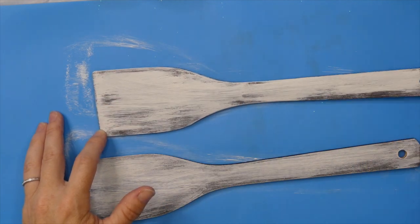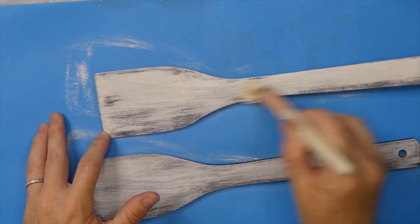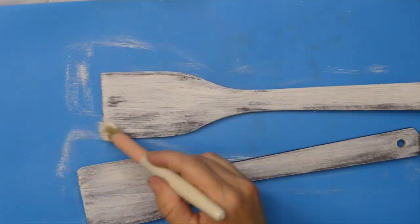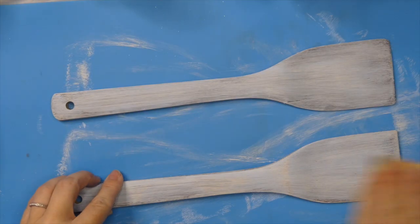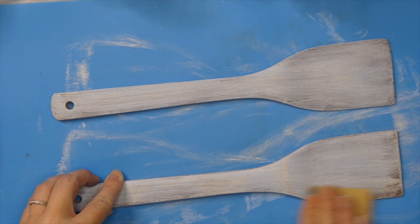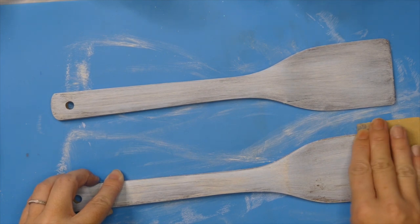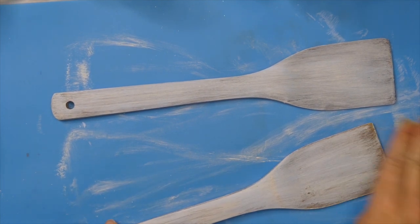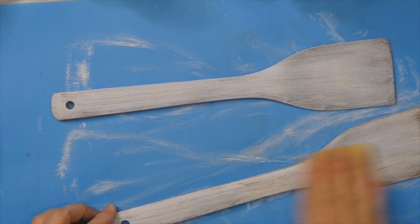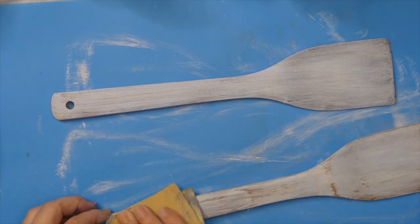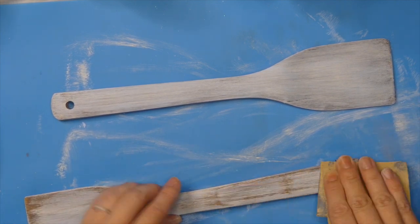I'm giving them a good coat, then I take my sandpaper from Dollar Tree and sand them down really well to give them that weathered look, so they look like they've been out in the sun and sea air for a very long time.